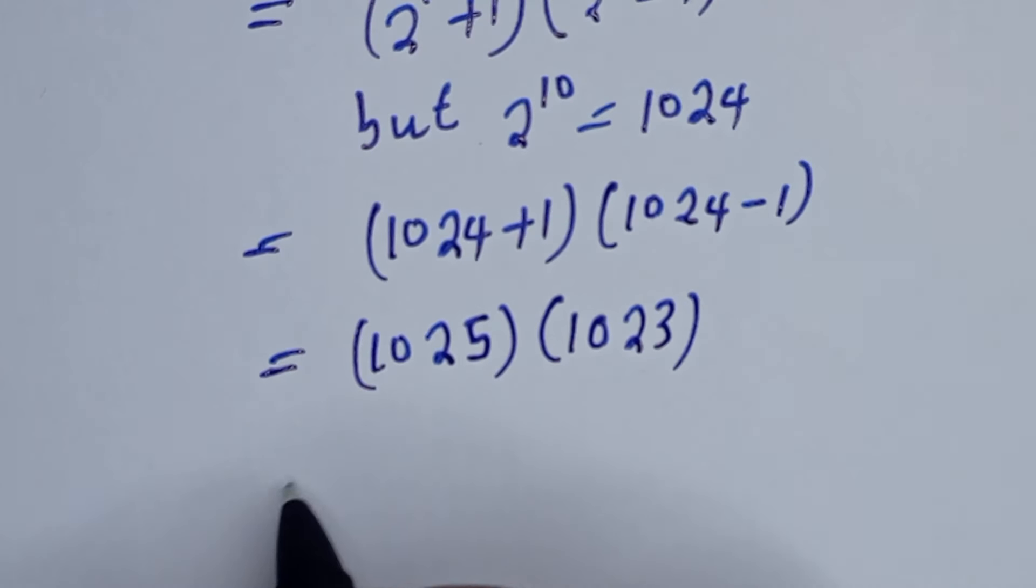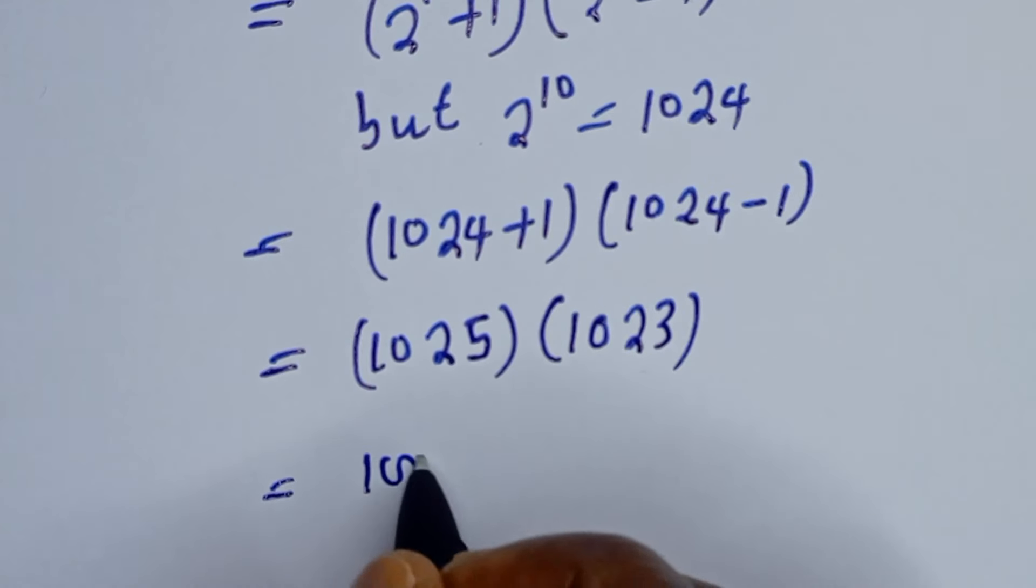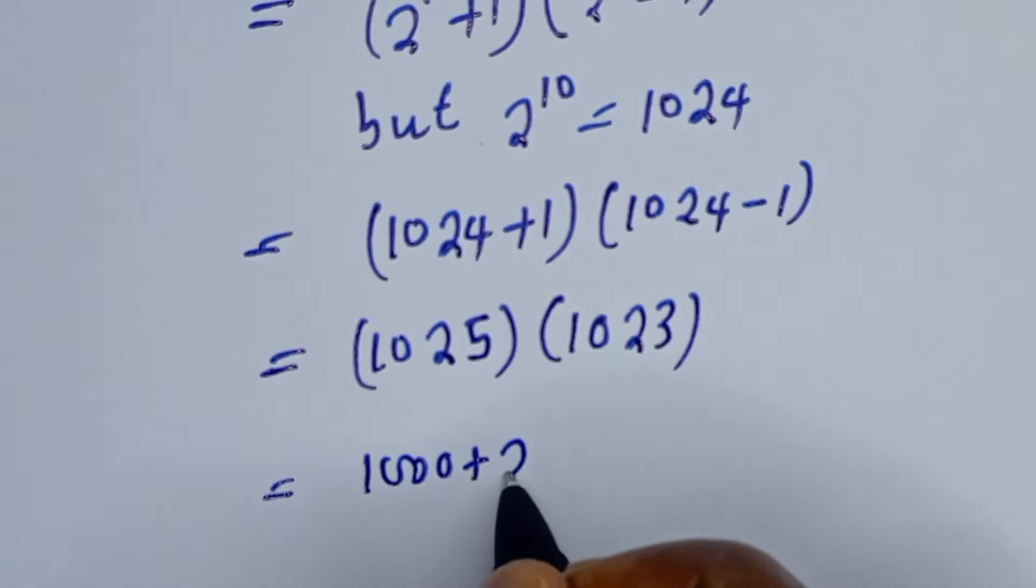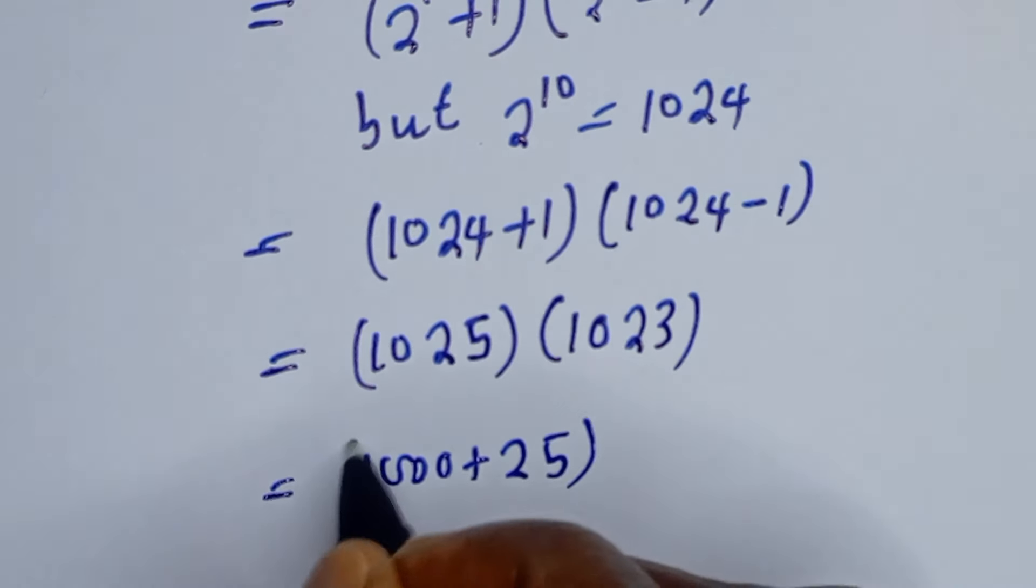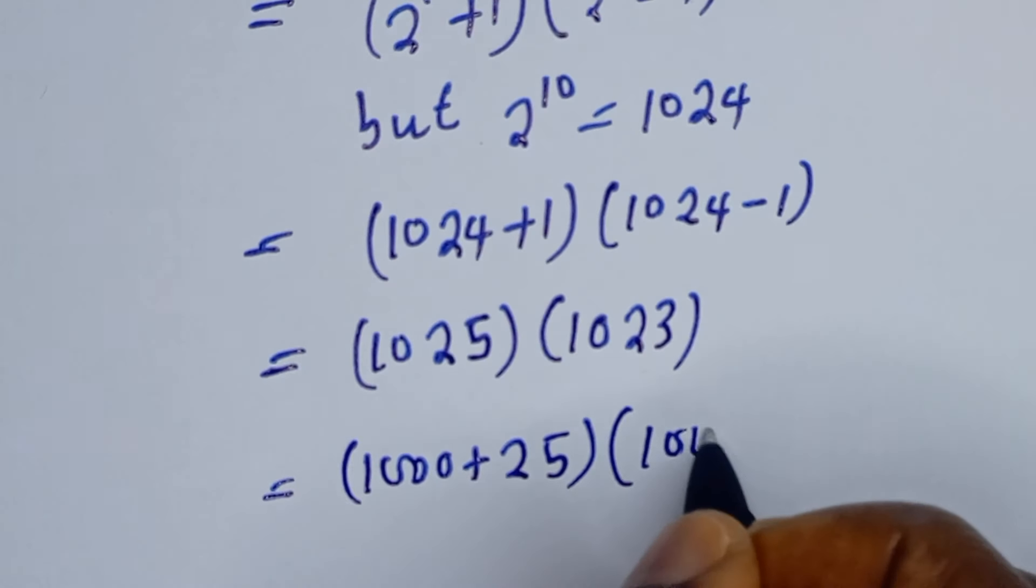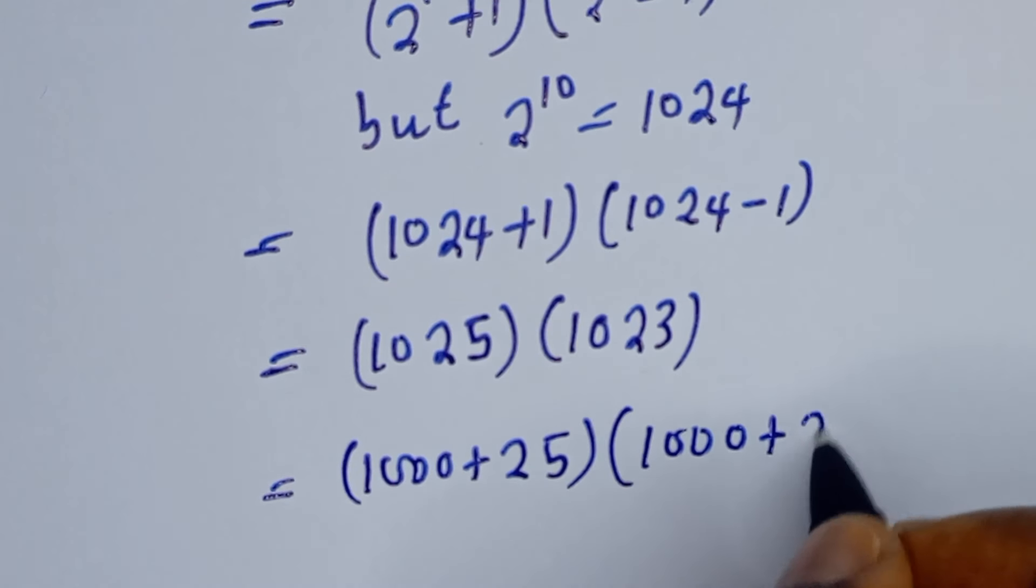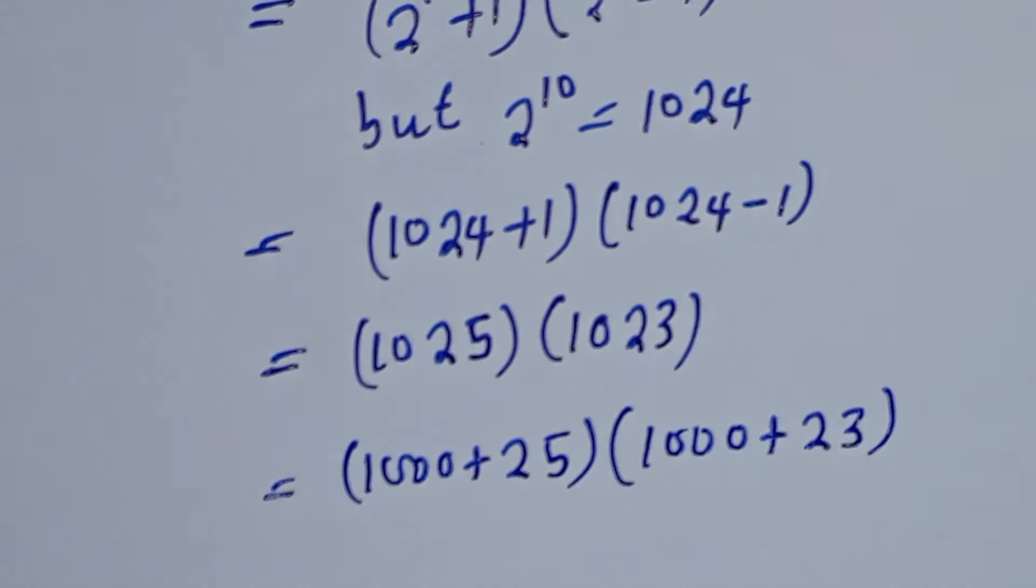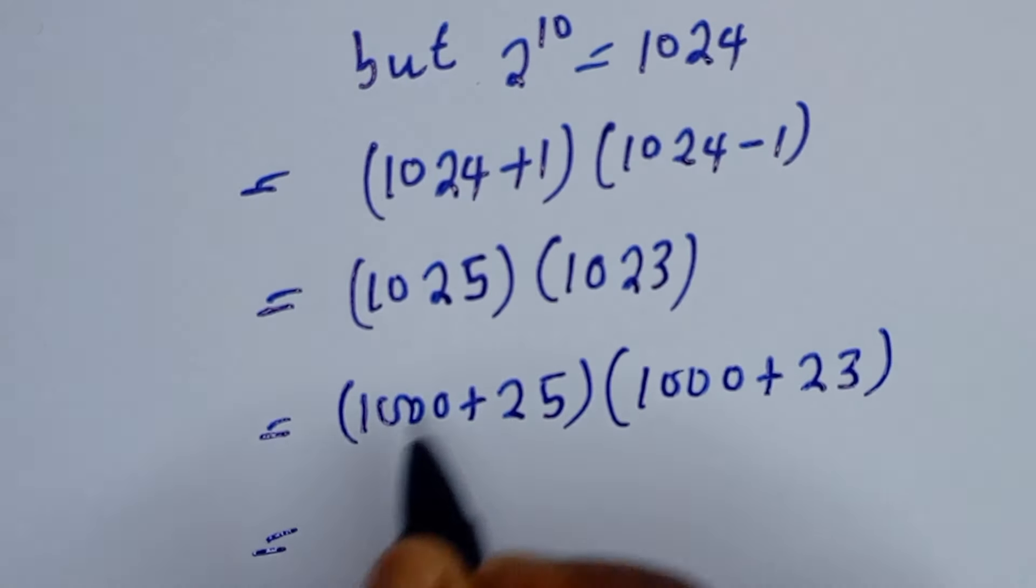1023. Then this is 1000 plus 25 times 1000 plus 23. Let's multiply out: 1000 times 1000, this is 1000 squared.